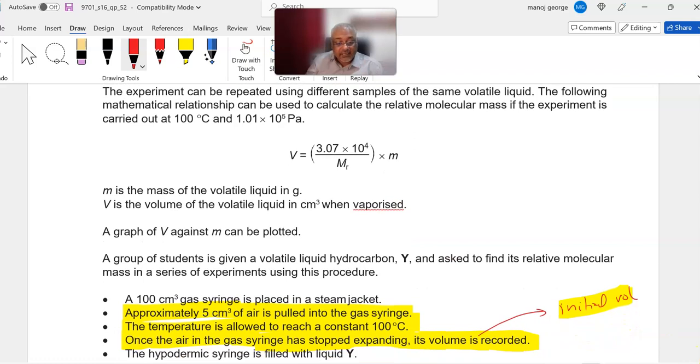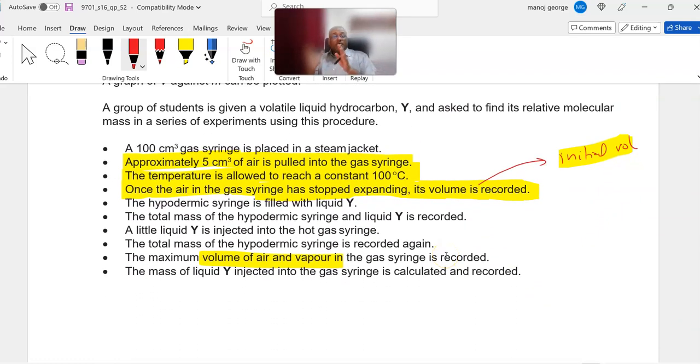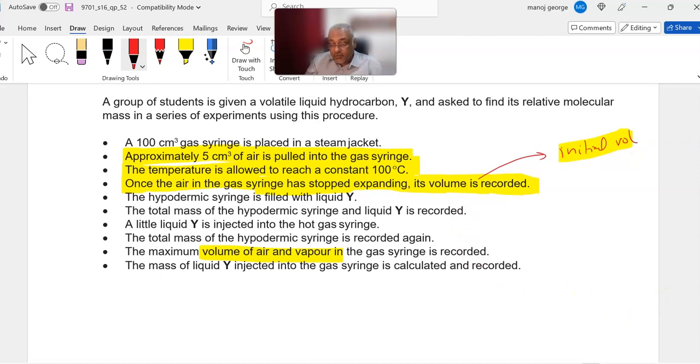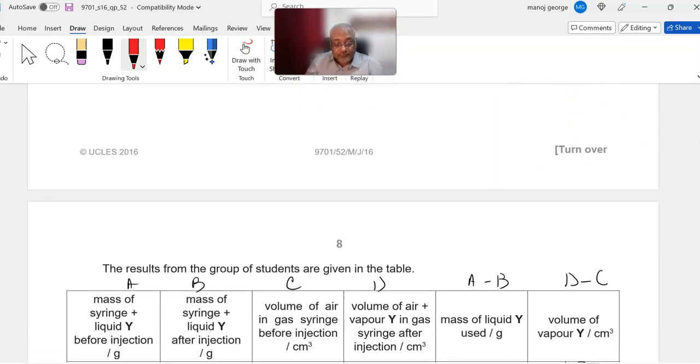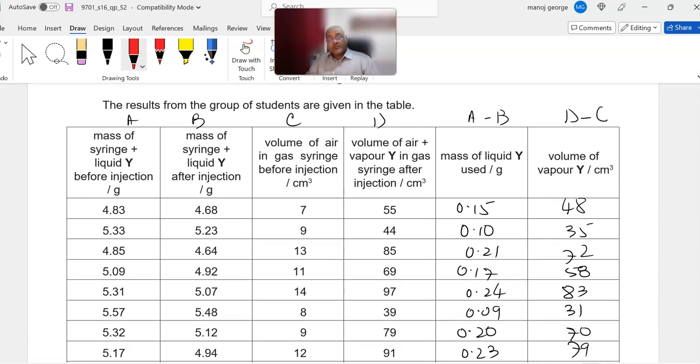When we go towards our next page, one of the first things you have to do is collect the data. The question talks about collecting the amount of the volatile liquid which converts into vapor form and also how much mass of the liquid has to be used.